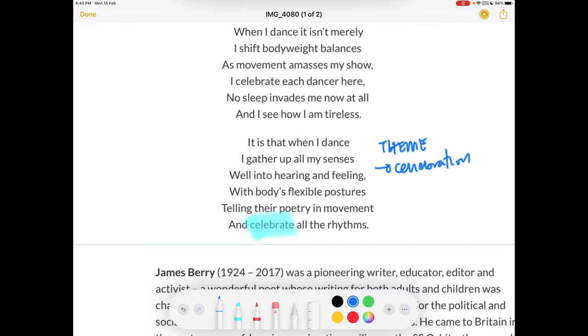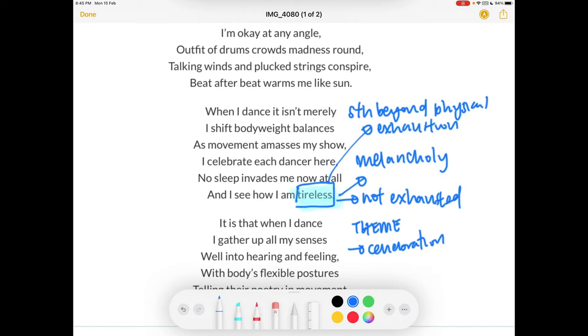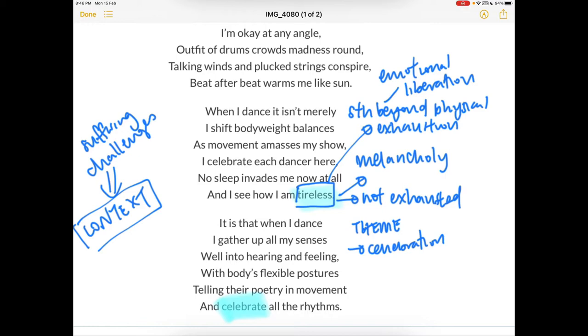And it's a lot about being tireless. Actually when I was reading this line, I feel a bit of melancholy. I feel like the poet is trying to say something beyond how the person is not exhausted. Tireless means you're not exhausted, but at the same time it shows that there is something beyond physical exhaustion, but also something like an emotional liberation. How the speaker is not tired of all the sufferings that come his way and all the challenges, as we'll see later in the context of this poet and his life.